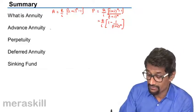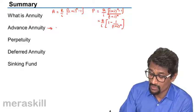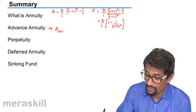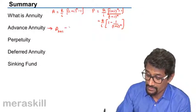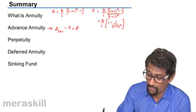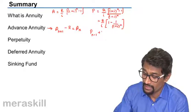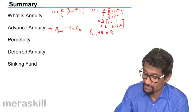Yes, advanced annuity we did. In case of amount, we calculate amount for one year more. Minus R will give you amount for those many years. And present value we calculate for N minus 1 and R will give you the present value.